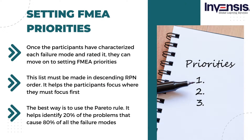The third step is setting FMEA priorities. Once the participants have characterized each failure mode and rated it, they can move on to setting priorities. This list must be made in descending RPN order, helping participants focus on the most critical items first and leaving lower-priority ones to last. The best way is to use the Pareto rule, which helps identify the 20% of problems that cause 80% of all failure modes.